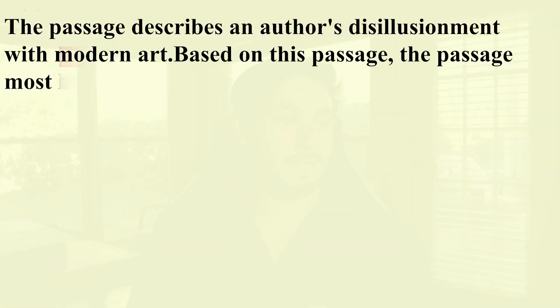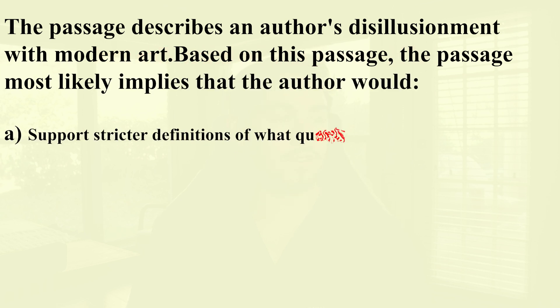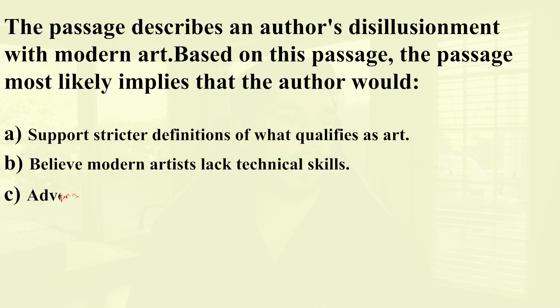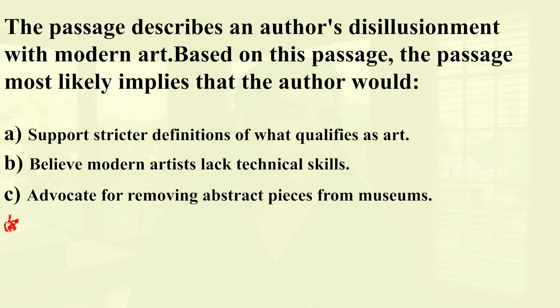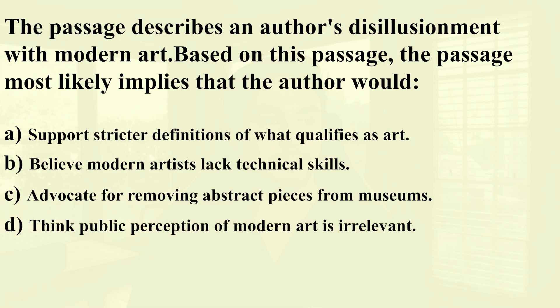The passage describes an author's disillusionment with modern art. Based on this passage, the passage most likely implies that the author would: A) support stricter definitions of what qualifies as art, B) believe modern artists lack technical skills, C) advocate for removing abstract pieces from museums, or D) think public perception of modern art is irrelevant. The question is asking what would be reasonable from the author's main argument — the disillusionment of modern art. The big takeaway: if it's not suggested in the passage, if there's zero support, it's not the correct answer, and you've always got to keep a foot on home base. That's probably the most common question pattern in CARS. If you can get that, you're on your way to a good score.